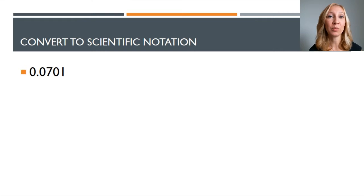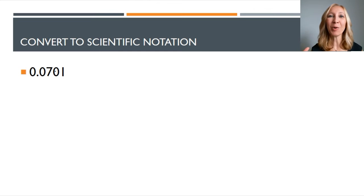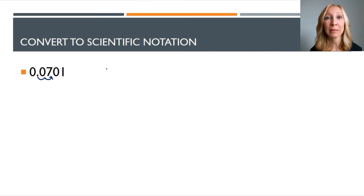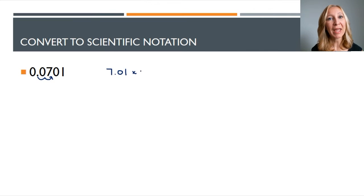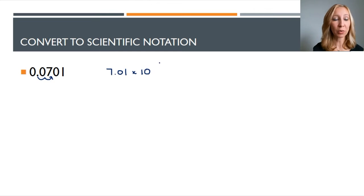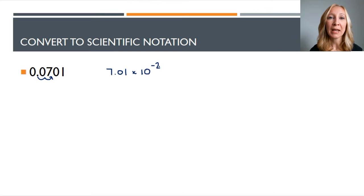Now we're going to convert standard numbers into scientific notation — the reverse process. We have point zero seven zero one. This is a very small number, so the exponent on that ten is going to be negative. We want to move the decimal so that we have a number greater than or equal to one but less than ten. So we move it over two places to get seven point zero one, and because we moved it two places the exponent is negative two.